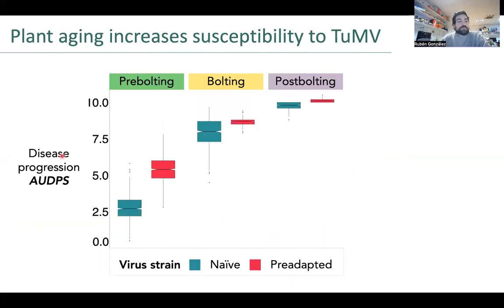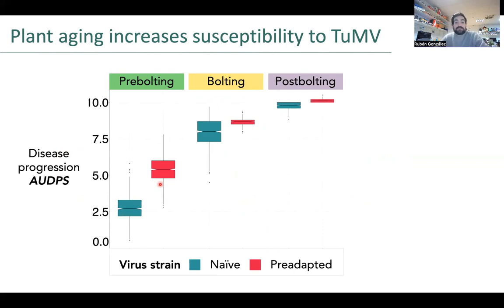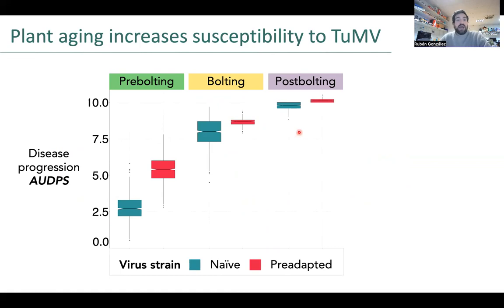What we have observed — here you can see data for the disease progression of the virus infection, in blue for the naive strain and red for the pre-adaptive strain — is that the pre-adaptive strain always performs better than the naive strain independently of the host age.